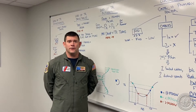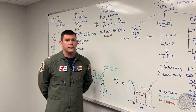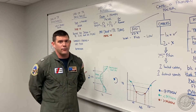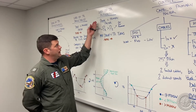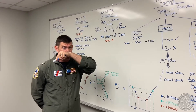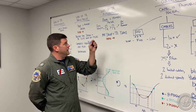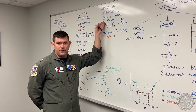Hey, welcome back. We're going to be talking about the third of four emergency categories with regard to tail rotors. The third one is going to be loss of tail rotor authority, where power is the primary factor.